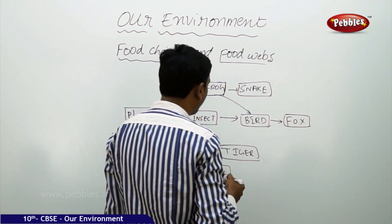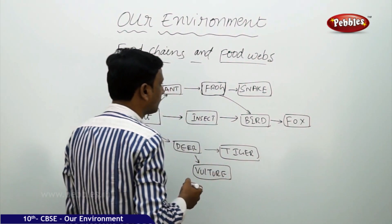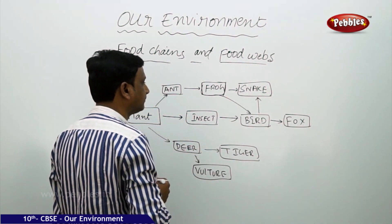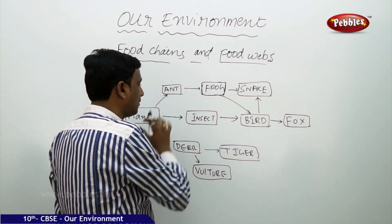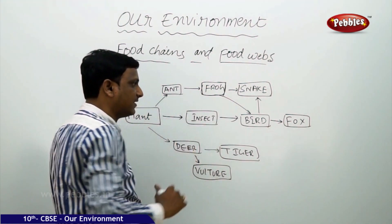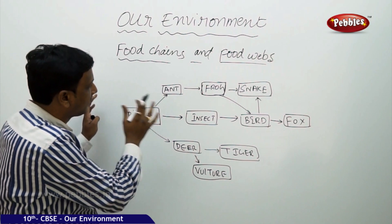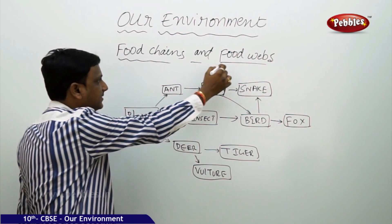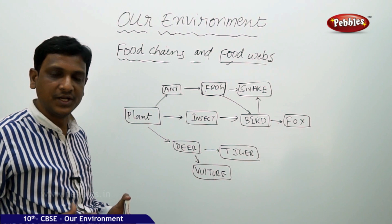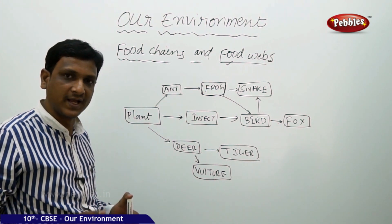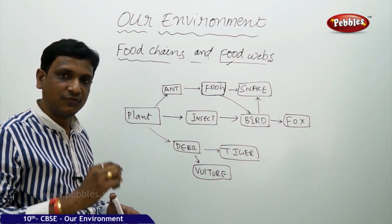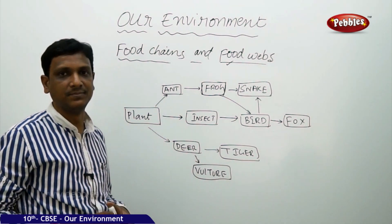You call it a food web. Bird can also eat a snake. So here we can find the interrelation between food chains. When it is like a web, you call it a food web. If you try to find the food relations between different organisms of an ecosystem, you find them in the form of food chains or food webs.